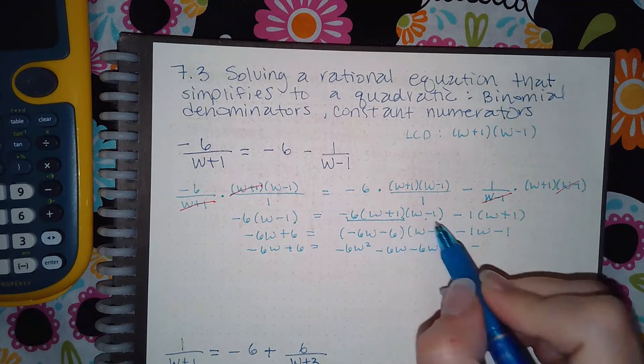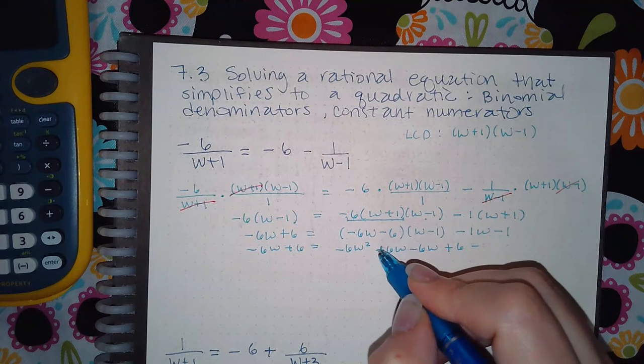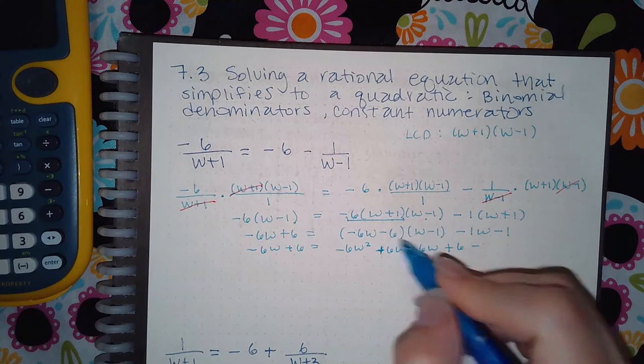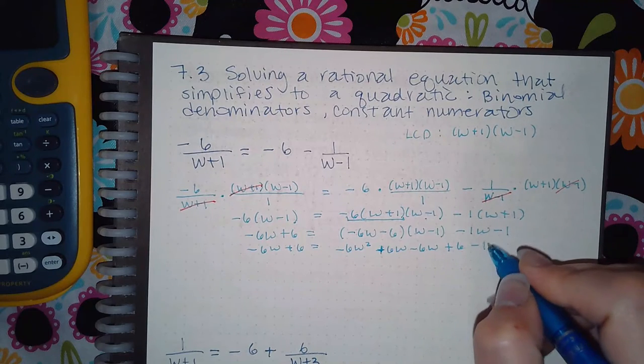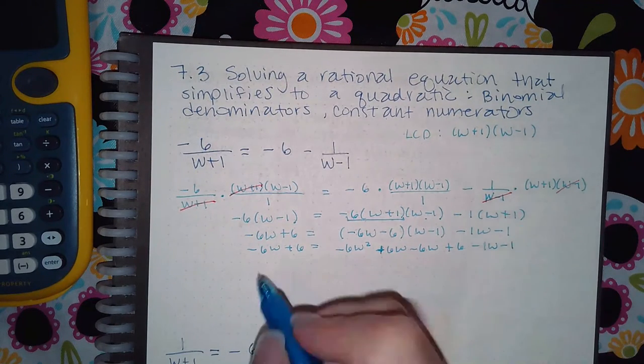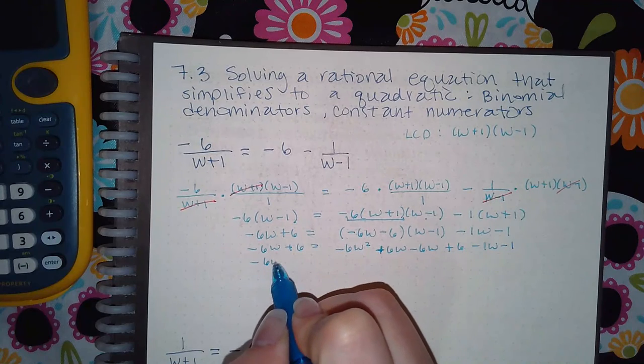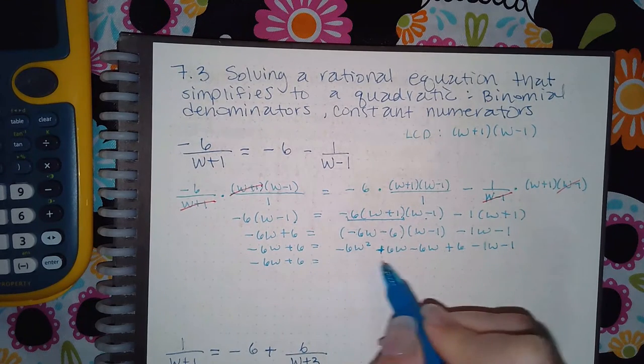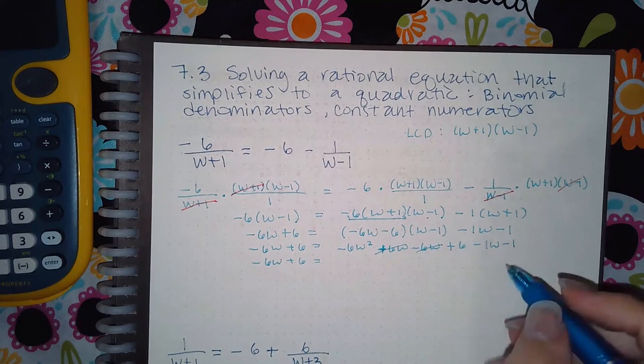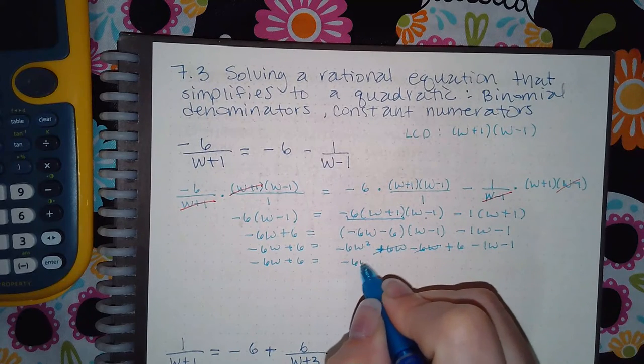Oh wait, this one should be positive 6w. And then negative 6w and positive 6. So then if I combine my like terms on the left-hand side, I get these two will cancel and I get negative 6w.